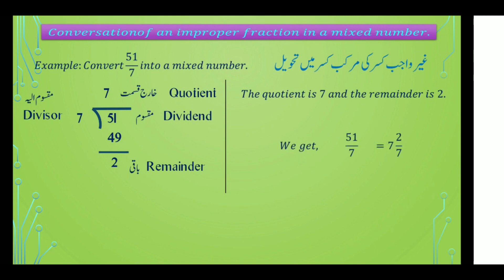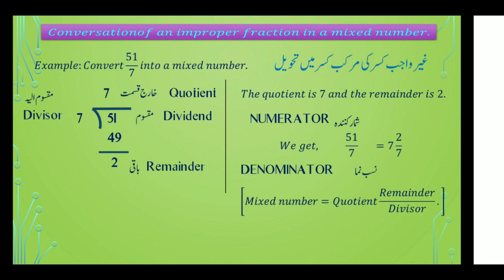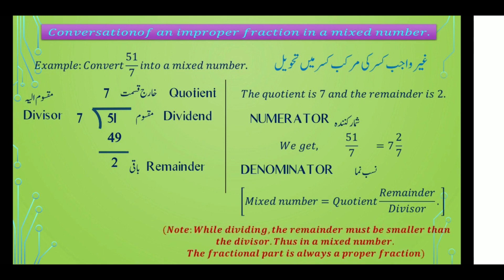اس طرح سے 51 بٹے 7 یعنی 7 عدد صحیح 2 بٹے 7 ملے گا۔ 51 numerator کہلاتا ہے — شمار کریندہ — اور 7 denominator ہے — نصف نماز۔ Mixed number is equal to quotient, remainder upon divisor — یہ آپ کو یاد رکھنا ہے۔